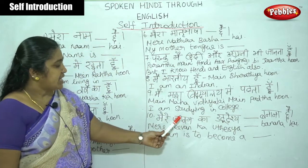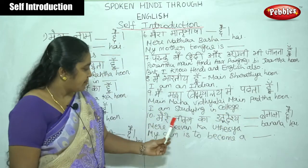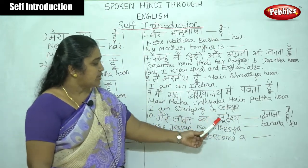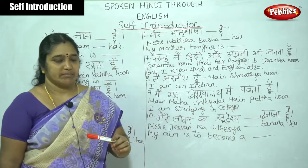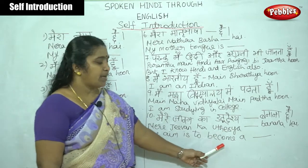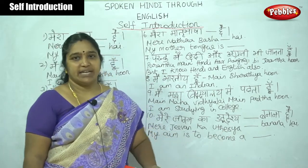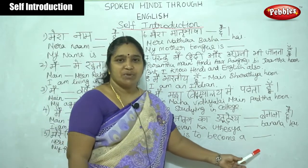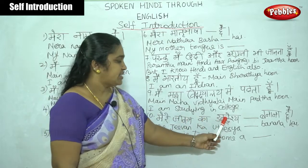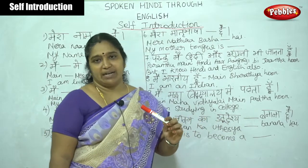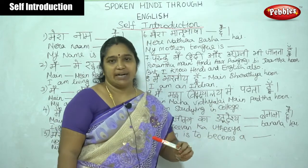For our life aim: 'Mere jivan ka utteshya dash banana hai.' Here we write our aim — for example, my aim is to become a doctor, an engineer, or a teacher. In Hindi: 'Mere jivan ka utteshya adhyapak banana hai,' 'Vakil banana hai' (lawyer), 'Abhiyanta banana hai' (engineer).